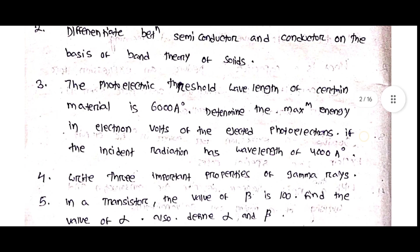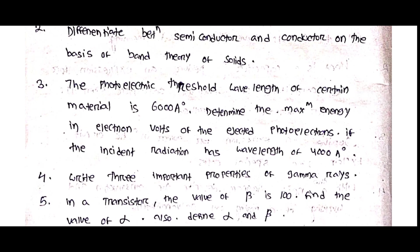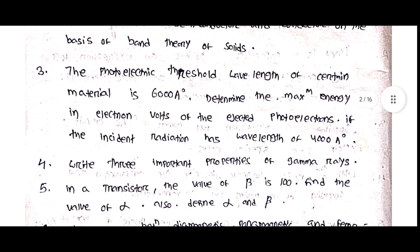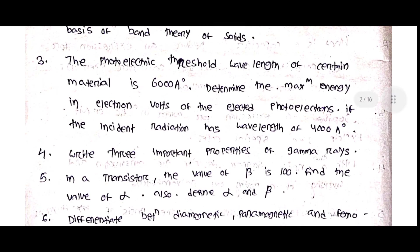Next: The photoelectric threshold wavelength of a certain material is 6000 Ångströms. Determine the maximum energy in electron volts of the ejected photoelectrons if the incident radiation has a wavelength of 4000 Ångströms.